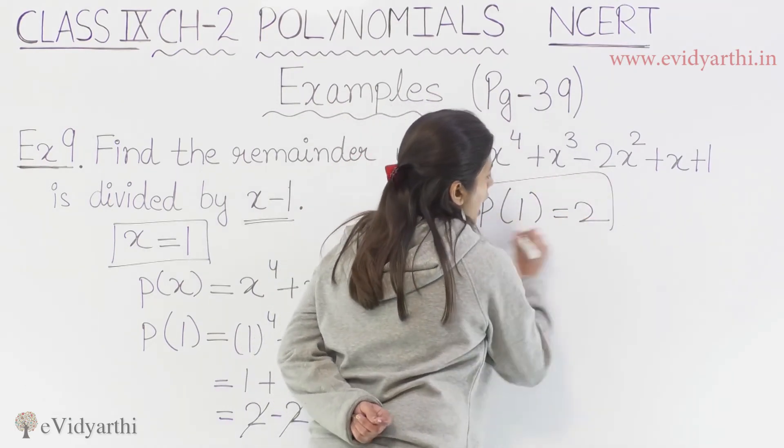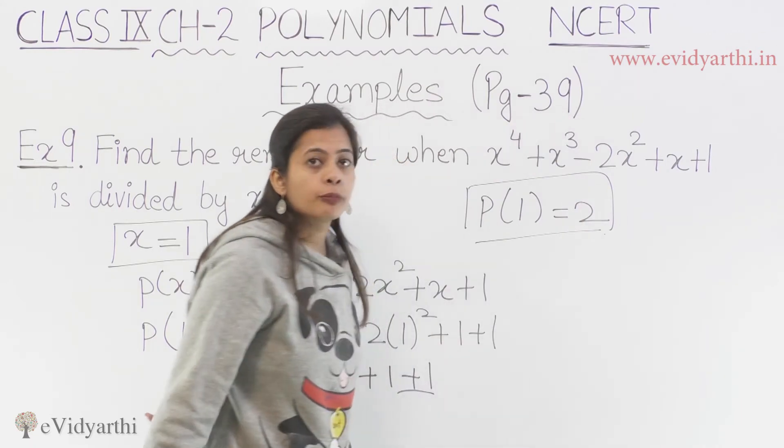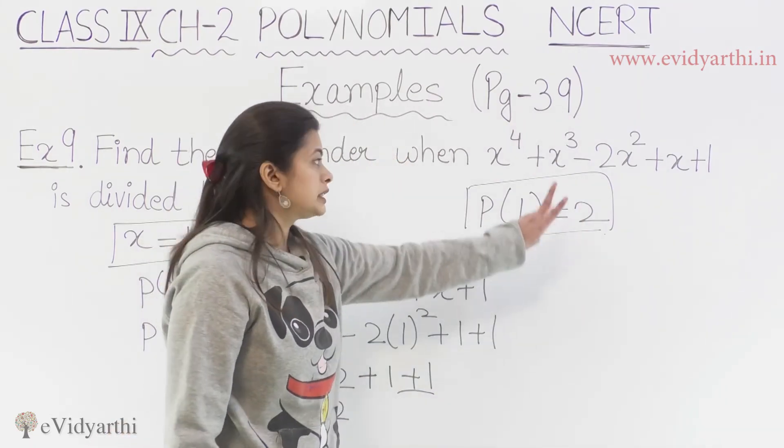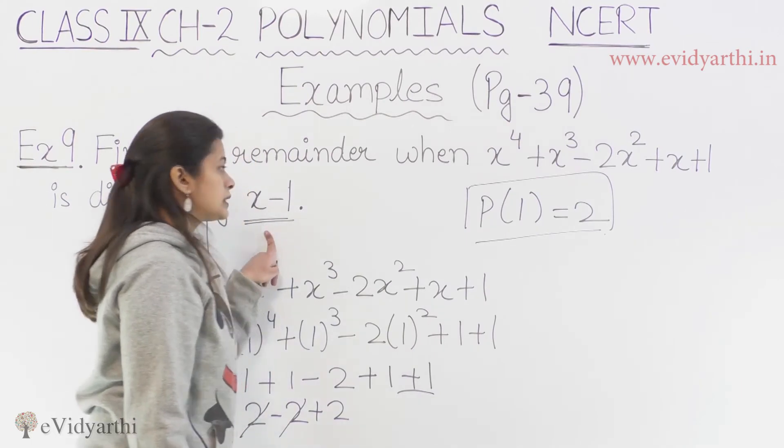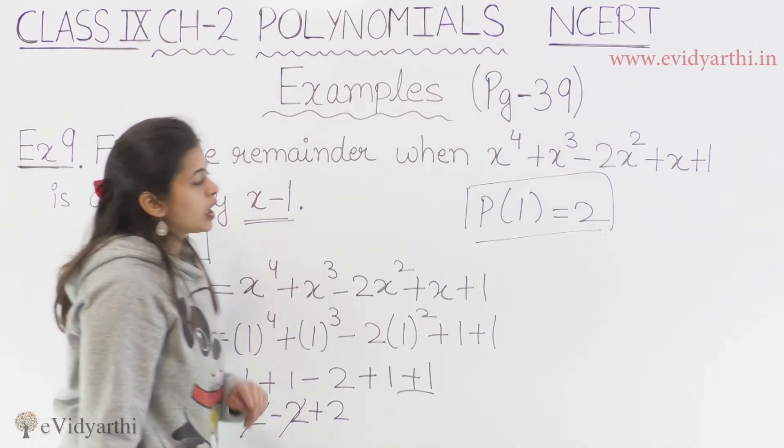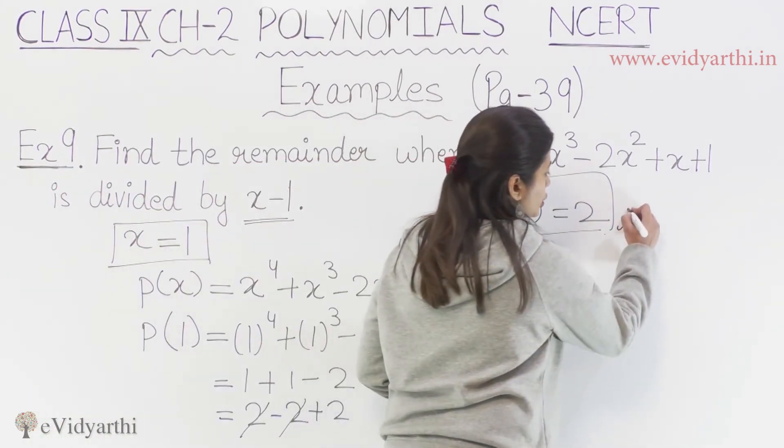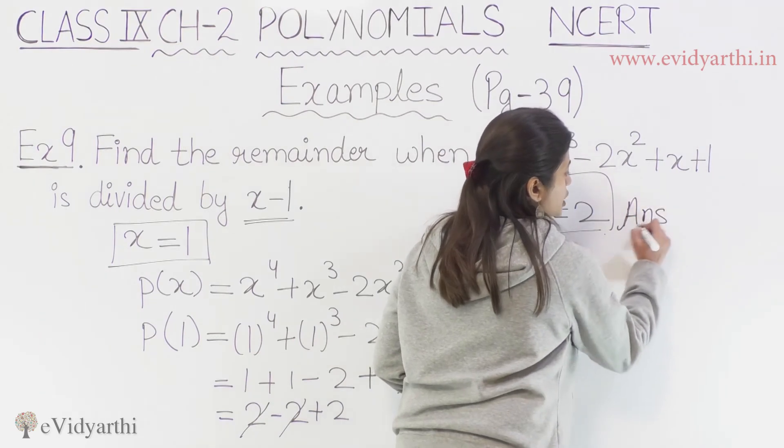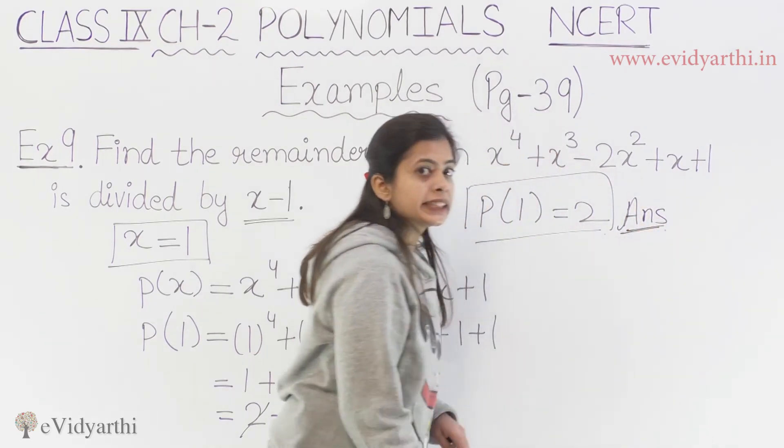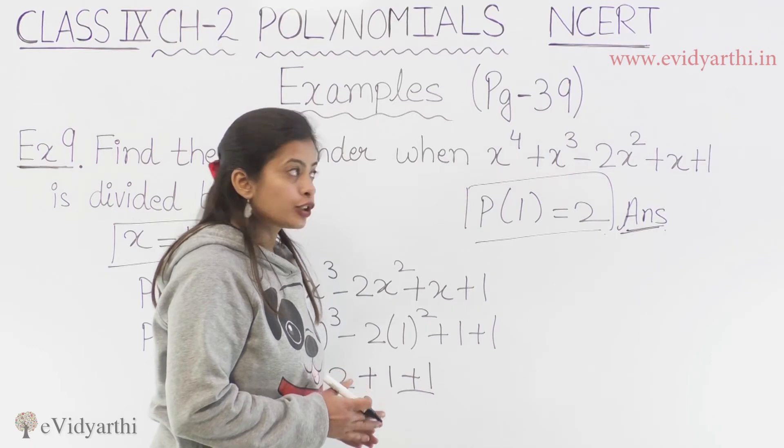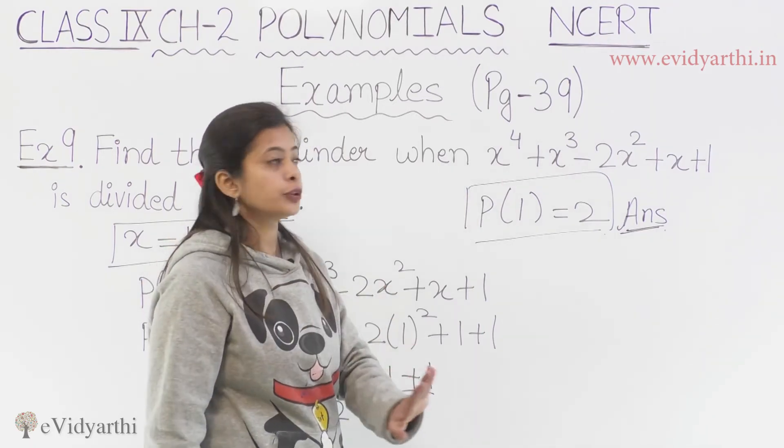So our remainder to the above polynomial is equal to 2. When we divide this polynomial, we have remainder 2. So if you want to verify this with long division method, I know most of you will not.